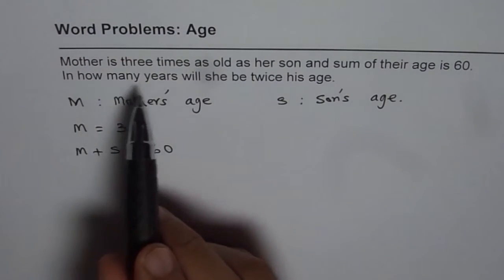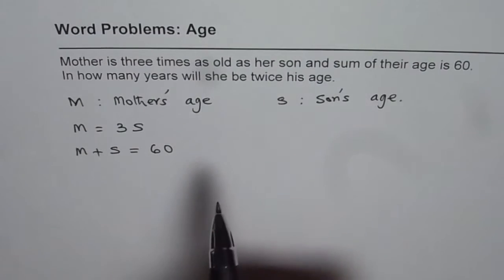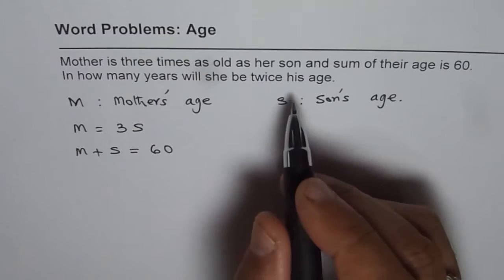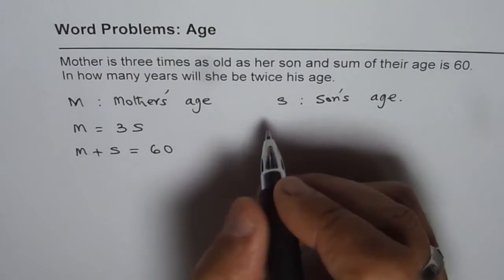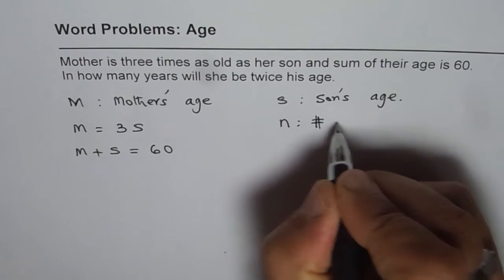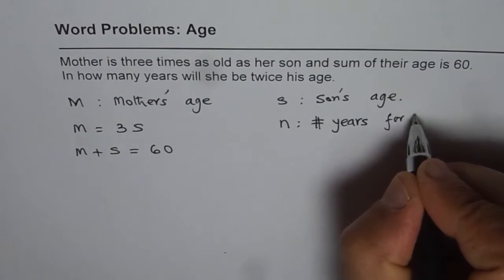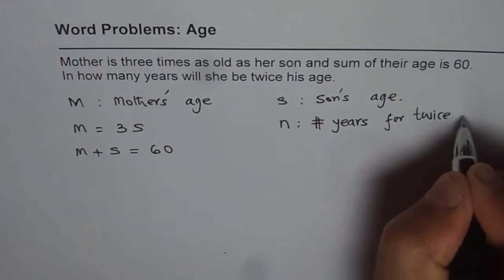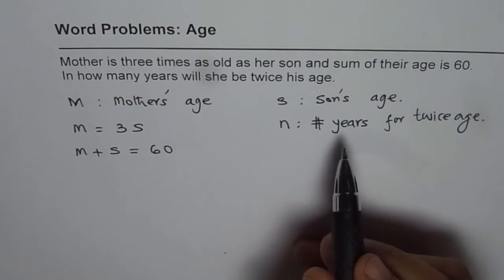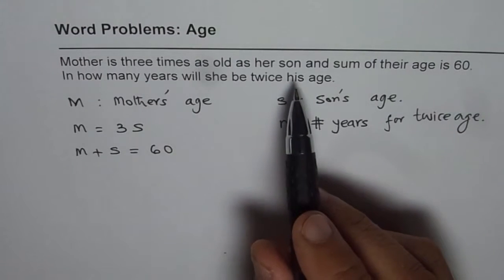Now the question is, in how many years will she be twice his age? So we do not know how many years. We say let the number of years be N. So we have one more variable here. N be number of years for twice age. So basically after N years, mother will be twice the age of her son.